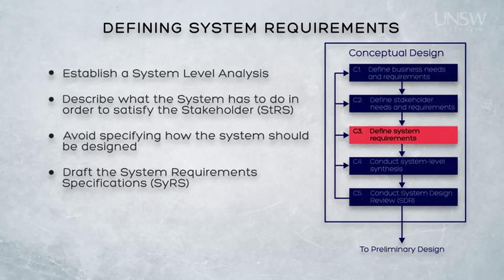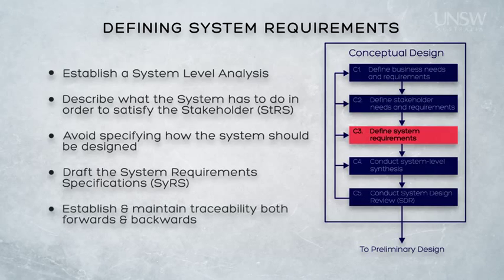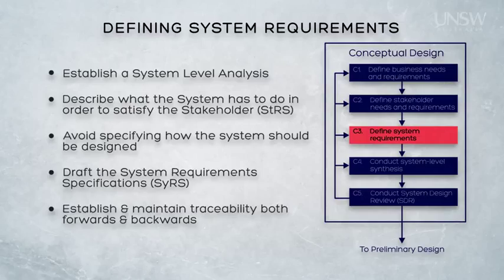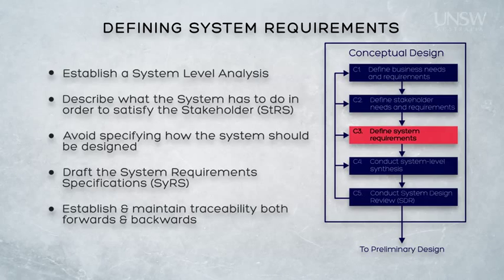As we're drafting this artefact, we establish and maintain traceability from our system requirements back to the stakeholder requirements, just to ensure that everything we specify has a reason for being there. We also trace from the stakeholder requirements forward to the system level requirements to ensure that we've addressed all of the stakeholder requirements. Traceability, both forwards and backwards, between different levels of requirements, is a cornerstone of requirements engineering. In this case, it's traceability between stakeholder and system level requirements that's of interest to us. Later, the traceability of interest will be between system level requirements and lower level design requirements of our solution.